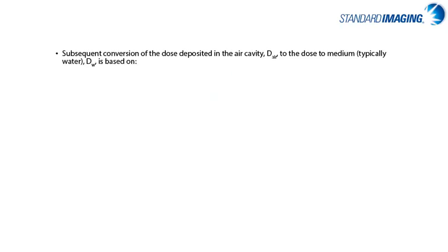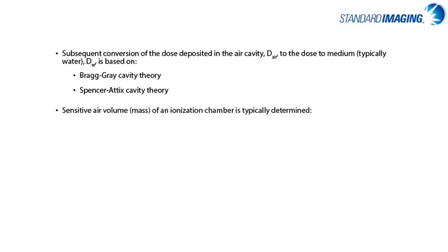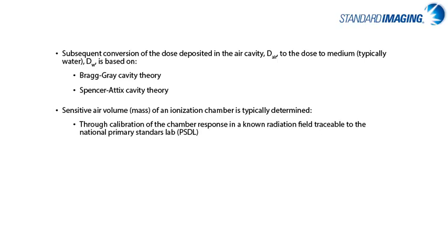From the dose deposited in air, we can convert to a dose to medium — typically water — using cavity theory, such as Bragg-Gray cavity theory or Spencer-Attix cavity theory. With cavity theory, the mass of air, or other material if it isn't air, must be accurately known, and for ion chambers used in the clinical setting, this is typically determined through calibration of the chamber response to a known radiation field that is traceable to a national primary standards lab.